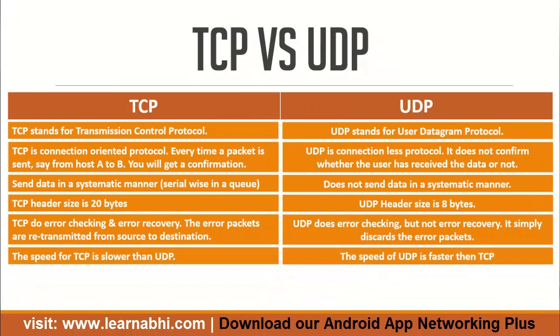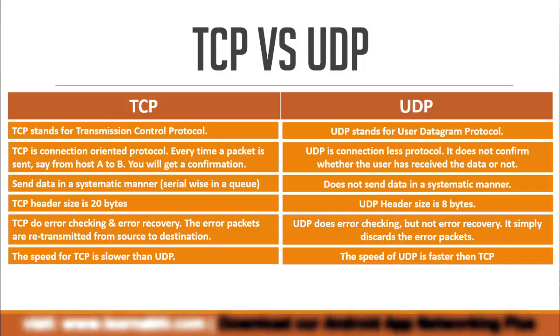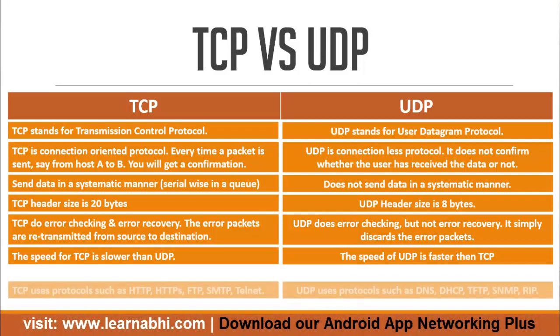The speed of TCP is slower than UDP. On the other hand, the speed of UDP is definitely faster than TCP.